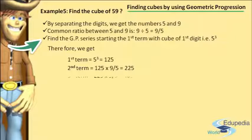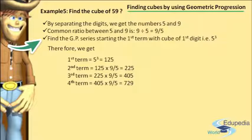To find the third term, we take the second term and multiply it by the common ratio 9/5. So 225 × 9/5 gives the product 405. To find the fourth term, we take the third term and multiply it by the common ratio 9/5. So 405 × 9/5 equals 729. After getting all four terms of the geometric progression series, we move to step number 4.